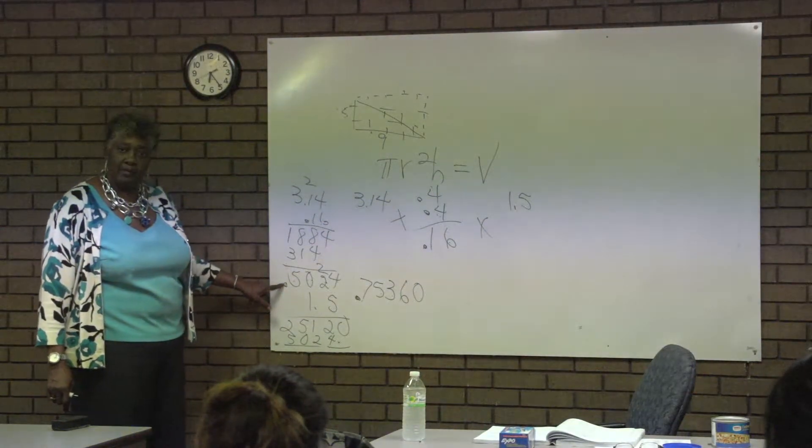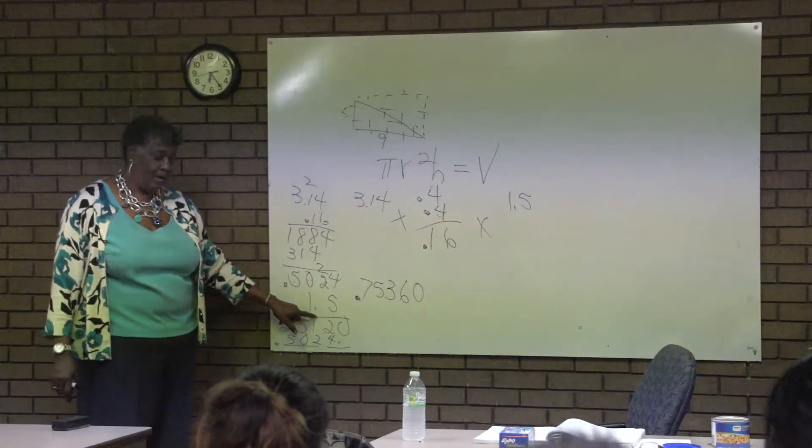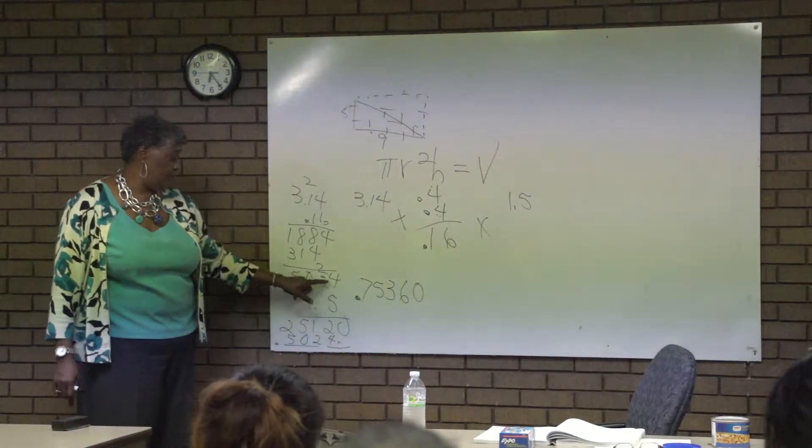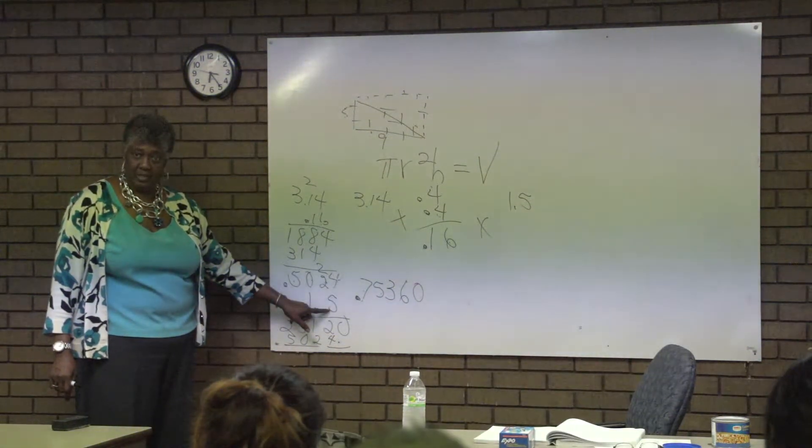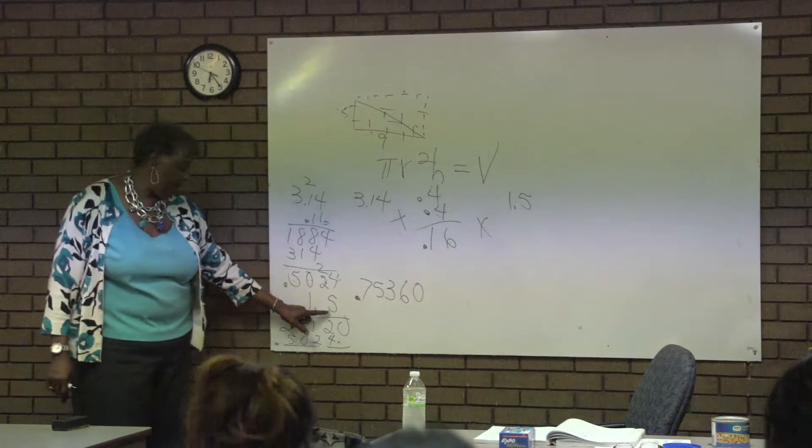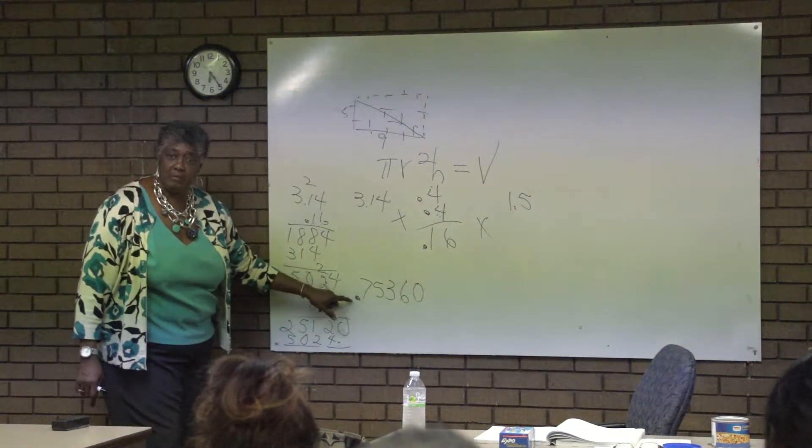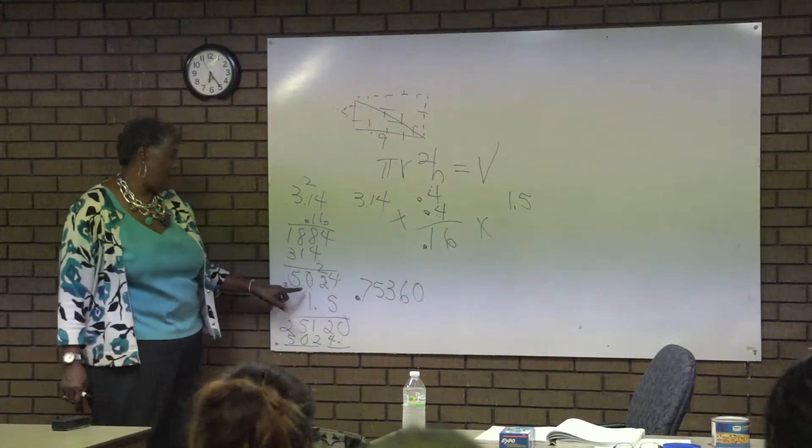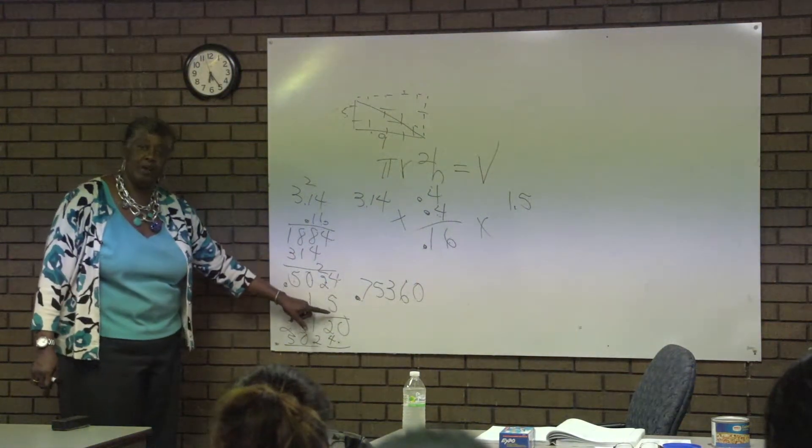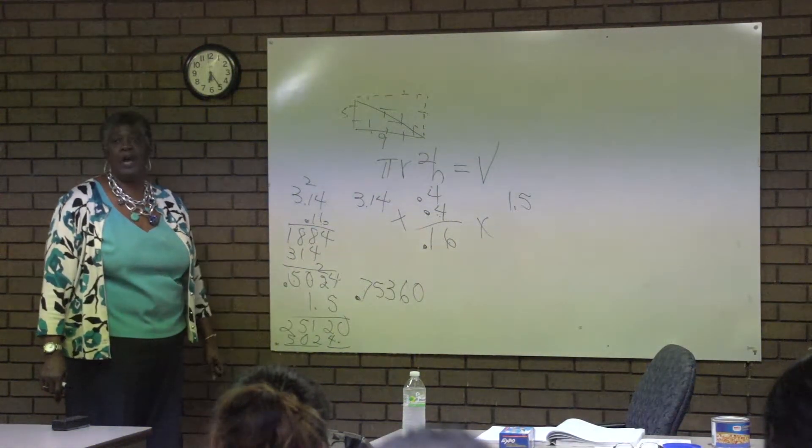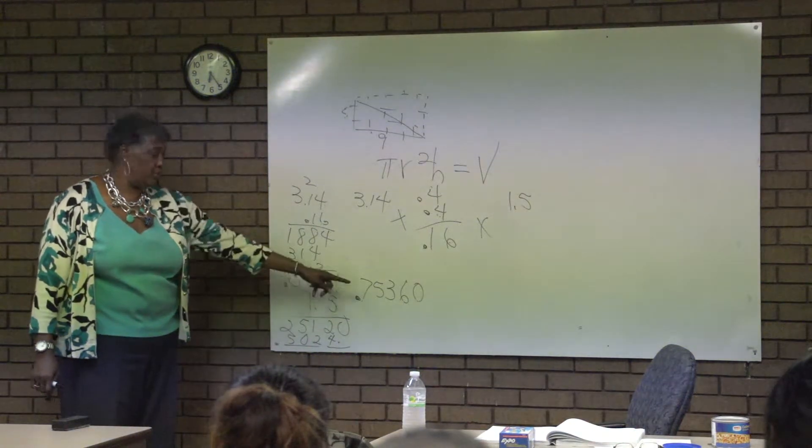And so then I multiplied it then times one point five. So now I have one, two, three, four, five places in my problem. I had to have one, two, three, four, five places in my answer. Because now I'm multiplying ten thousandths times tenths, which will give me hundred thousandths, which is what you get there.